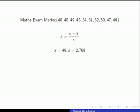Our mean value is 49 and our standard deviation is 2.789. We'll take the first observation which is 48, subtract the sample mean of 49, and divide by the standard deviation of 2.789.